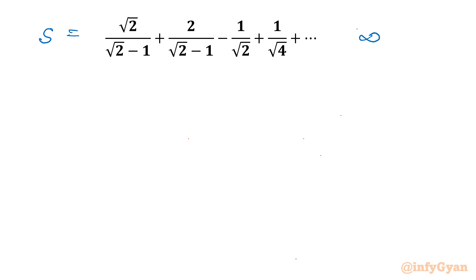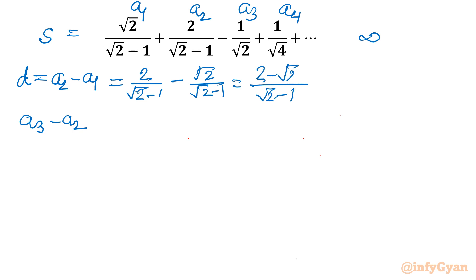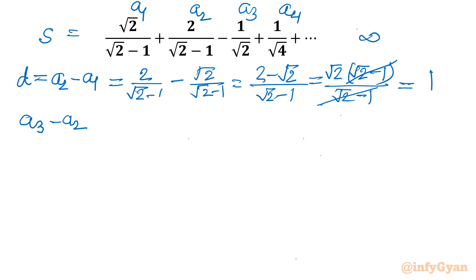I will begin by calculating the common difference of an AP. I'll check A2 minus A1, then A3 minus A2, treating A1, A2, A3, A4 as the given terms. For A2 minus A1: 2/(√2−1) minus √2/(√2−1). The denominator is the same, so the numerator is 2 minus √2. Factoring out √2 gives √2(√2−1), and the denominator (√2−1) cancels. So A2 minus A1 equals √2.